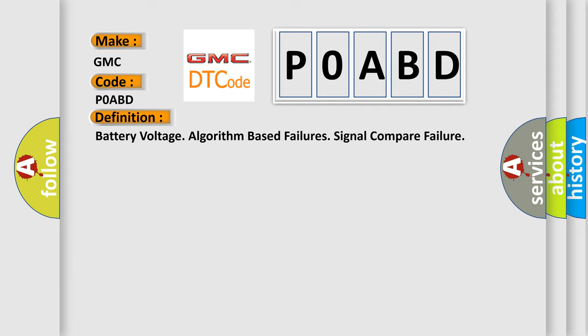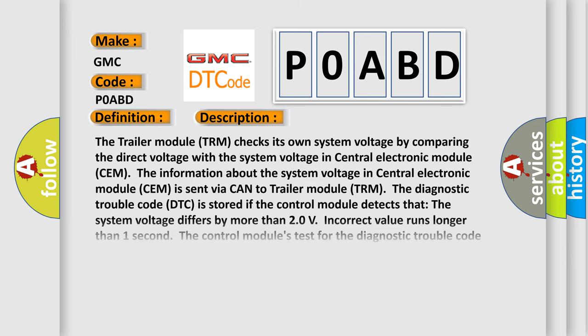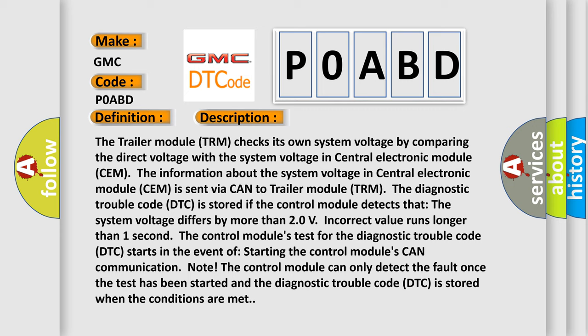The basic definition is: Battery Voltage Algorithm Based Failure Signal Compare Failure. The trailer module TRM checks its own system voltage by comparing the direct voltage with the system voltage in the central electronic module SEM. The information about the system voltage in SEM is sent via CAN to trailer module TRM. The DTC is stored if the control module detects that the system voltage differs by more than 20 volts, or an incorrect value runs longer than one second. The test starts upon CAN communication initialization, and the DTC is stored when the conditions are met.